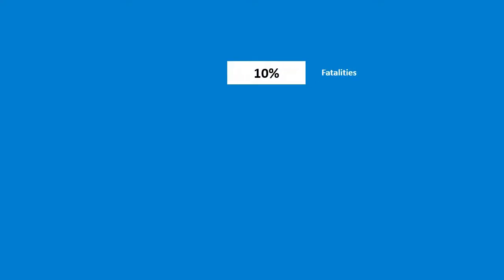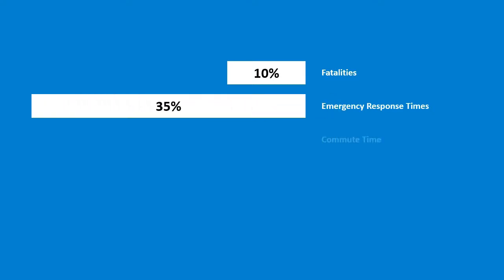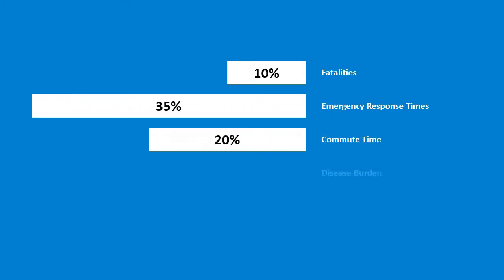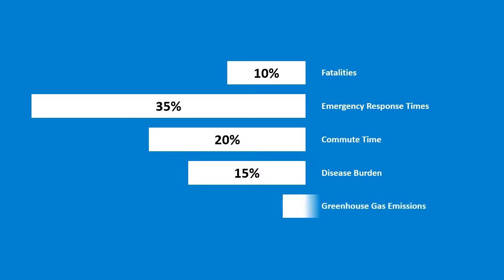According to a study by McKinsey Global Institute, smart city technologies on average reduce fatalities by 10%, emergency response times by 35%, commute time by 20%, disease burden by 15%, and greenhouse gas emissions by 15%.